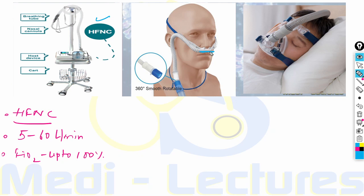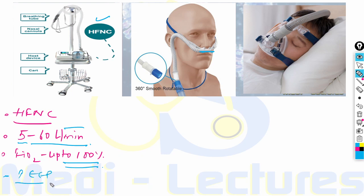The high flow nasal cannula device fits into the nose just like a nasal cannula. It can deliver oxygen at 5 to 60 liters per minute and FiO2 up to 100%. Importantly, the high flow nasal cannula also provides PEEP due to its high flow nasal oxygenation, generating positive end-expiratory pressure.